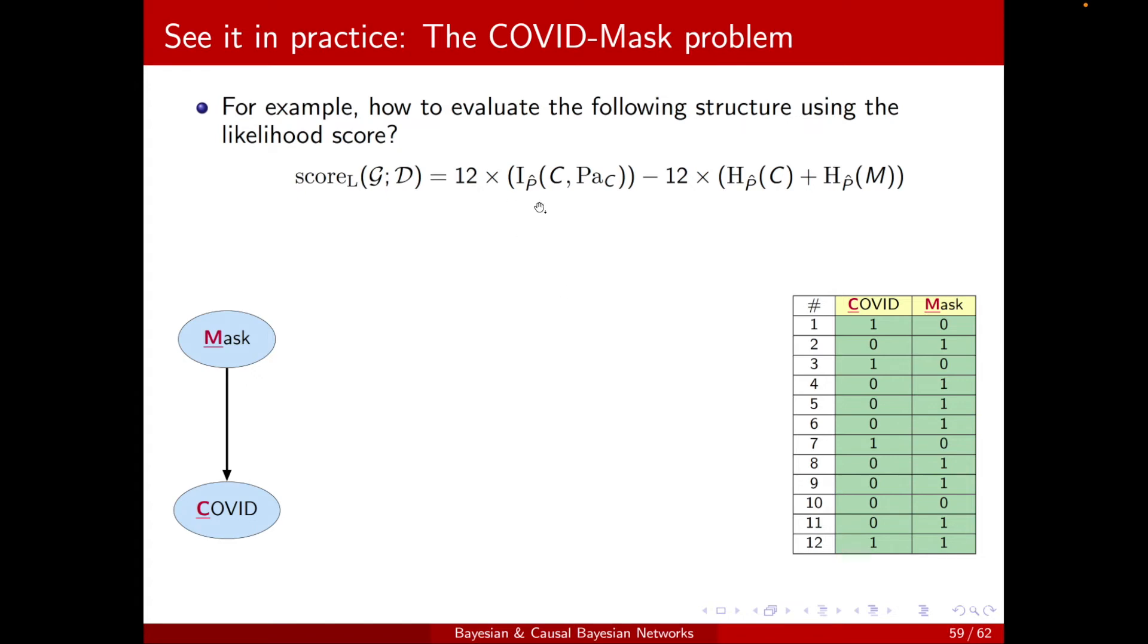It will be n times the mutual informations minus n times the entropies. For the mutual informations, I only have C and the parents, which is mask, because masks, the parents of masks are empty, and the mutual information will be zero for that term.